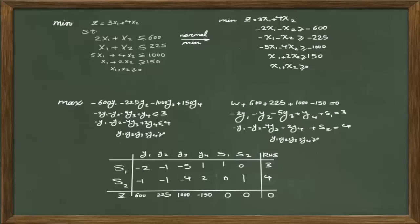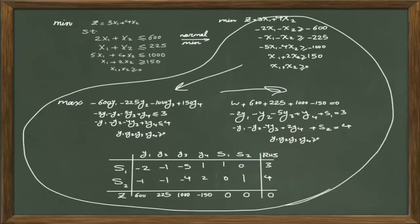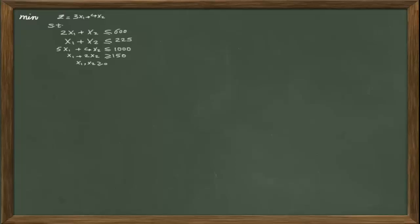Now we can introduce the concept of the dual simplex method. In dual simplex, we are trying to solve the dual of the initial problem without actually going through these steps — without normalizing the problem, without writing the dual, and without standardizing it. We eliminate these steps and find the solution by setting up a simplex table for the initial problem directly. However, it is important to know that we cannot use the dual simplex method for all linear programming problems.